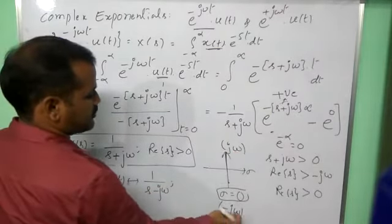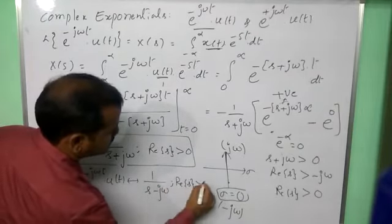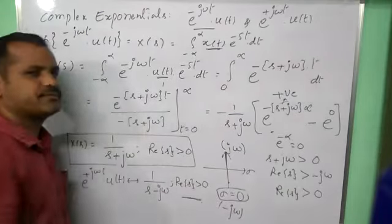Here plus jω minus jω, we are writing sigma value 0, so that ROC, same ROC we are getting like this. Thank you.